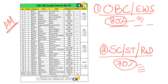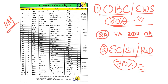The main reason why you get the IIM call even at a low percentile is because there are very few people who can clear all four cutoffs. Yes, there are four cutoffs, not three — Quant, Verbal, DI, and Logic — and Overall. Anybody who clears all four cutoffs from the reserved category will get an IIM call. It doesn't matter whether you're OBC or EWS — everyone gets a call.